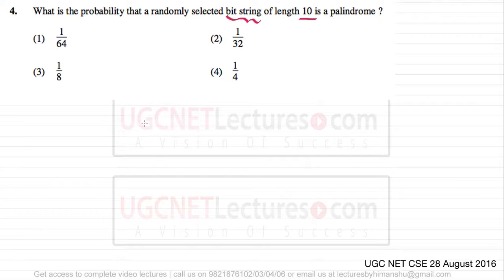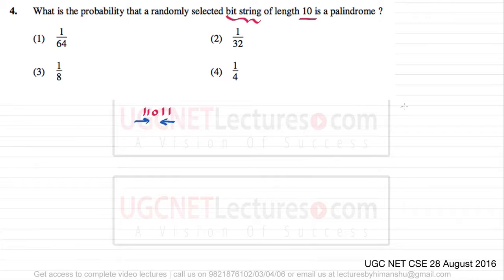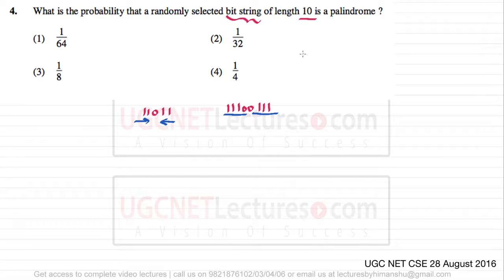Let's see when we can say a string is a palindrome. If we have a string like '1 1 0 1 1', this is a palindrome because you read the same string from the left or from the right. Similarly, a string like '1 1 1 0 0 1 1 1' reads the same from both directions.